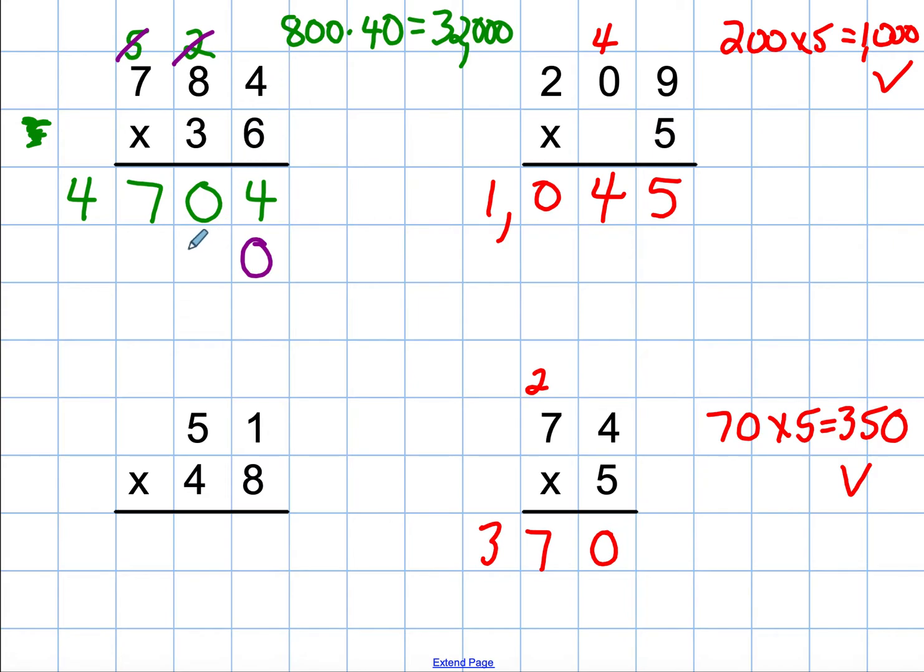3 times 4 is 12. Regroup the 1. 3 times 8 is 24, plus 1 is 25. And then 3 times 7 is 21, plus 2 is 23.